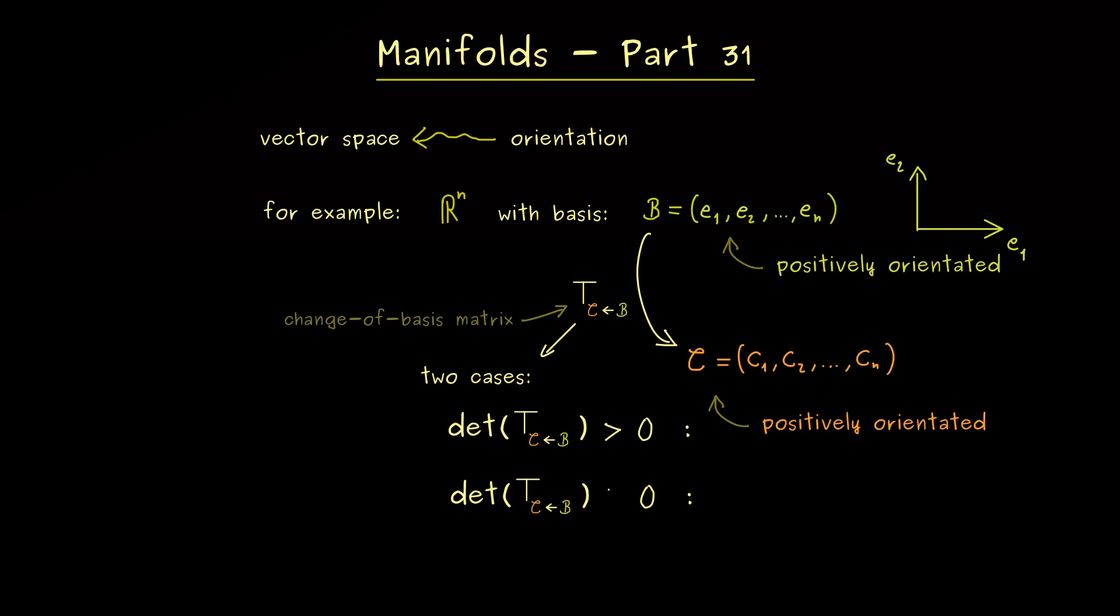But they don't have the same if the determinant of the transition matrix is less than zero. And then we would say that the new basis C is negatively orientated. Indeed, you could say this is the change from a right-handed coordinate system to a left-handed coordinate system. But again,